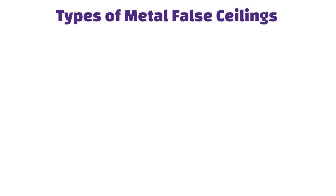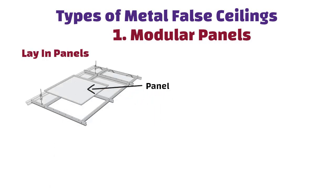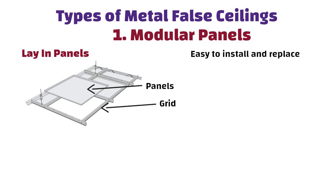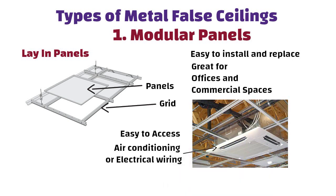Now let us understand types of metal false ceilings. First, Modular Panels — Lay-in panels. These panels sit in a grid that is hung from the ceiling. They are easy to install and replace, making them great for offices and other commercial spaces. The grid system also makes it easy to access things like air conditioning or electrical wiring above the ceiling.